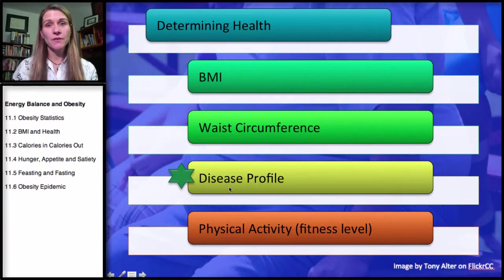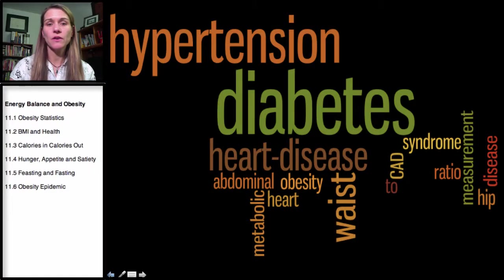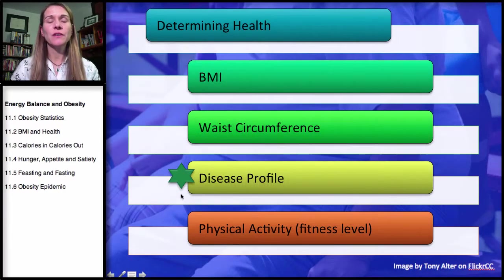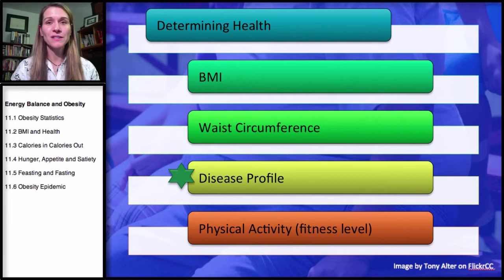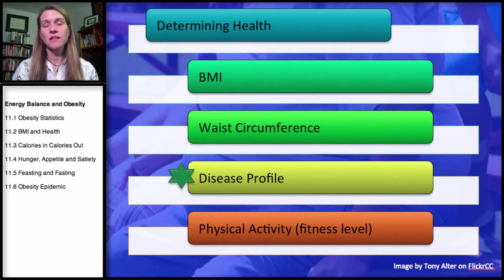Disease profile does make a difference. If someone already has one of these diseases — diabetes, heart disease, hypertension — that actually increases the risk of having complications associated with those problems or death. So when we're determining health, we're looking not only at the risk of developing a disease, but once you have a disease, you're going to have an increased risk of complications — what we call morbidity or mortality.